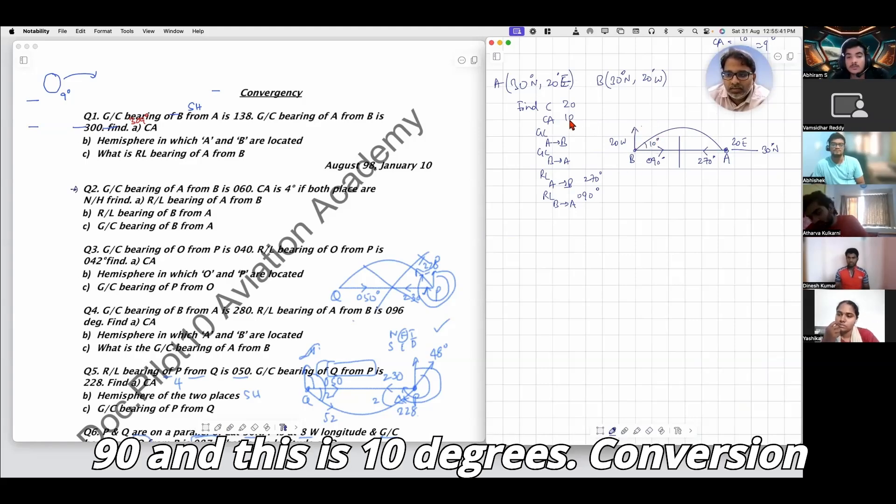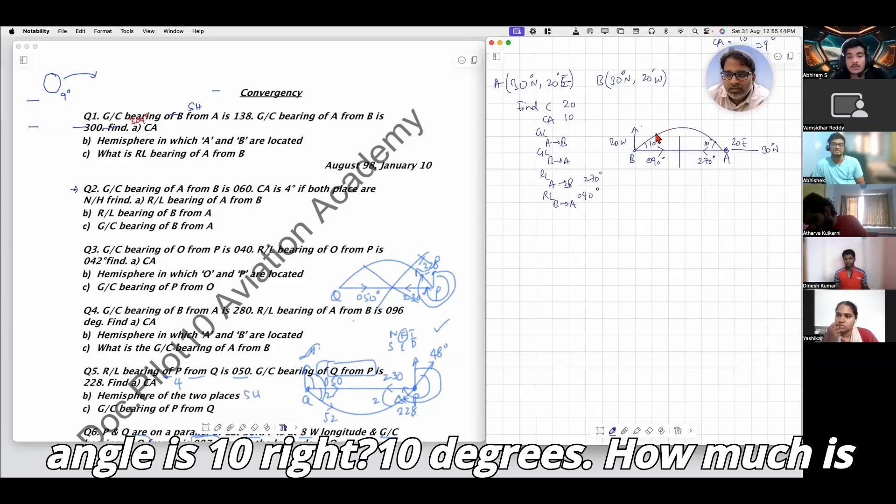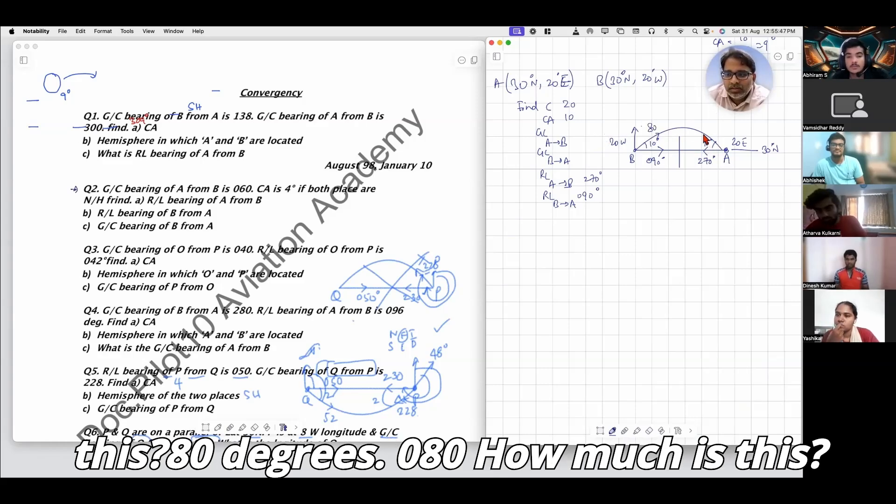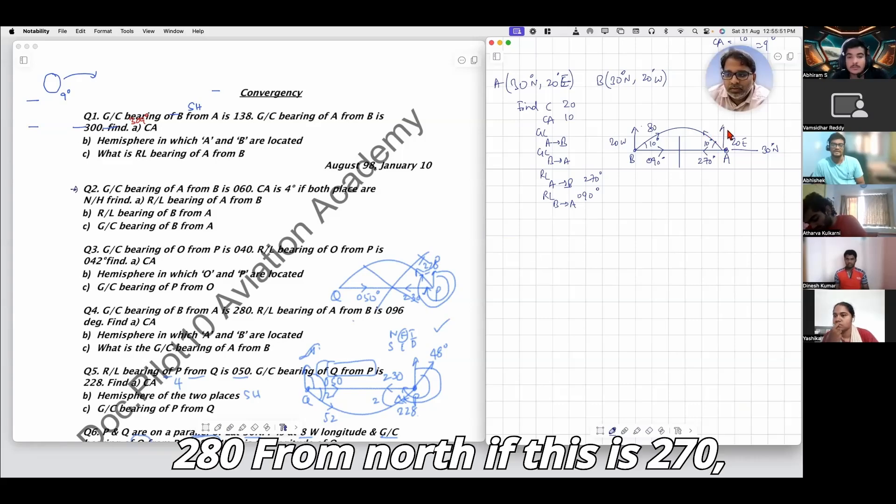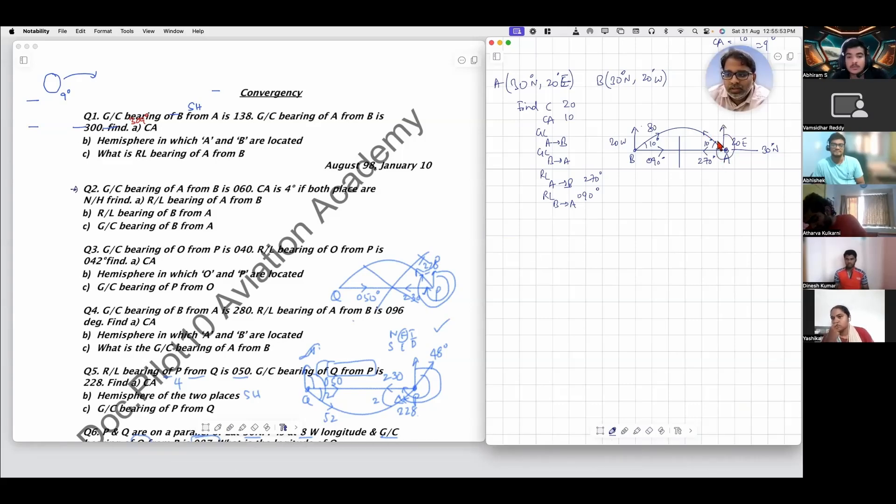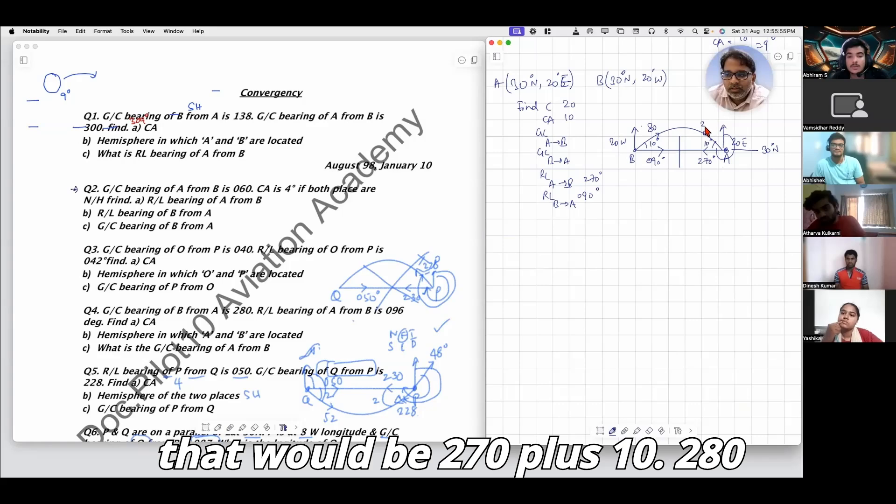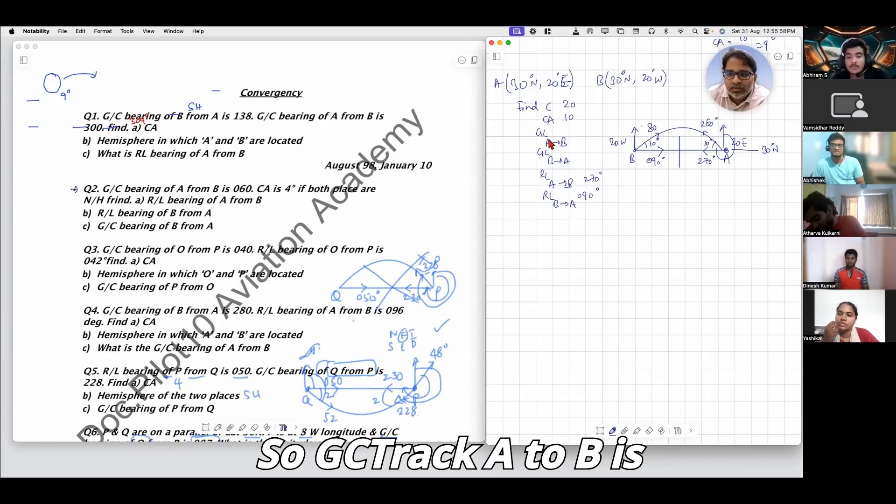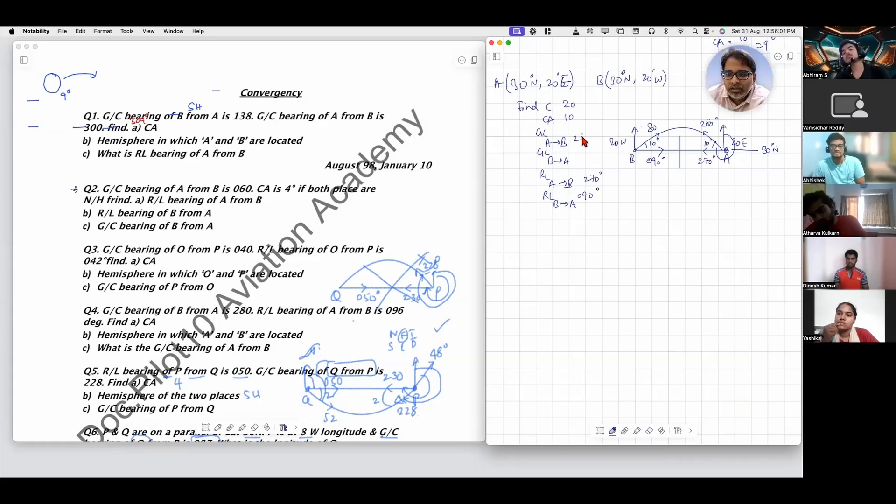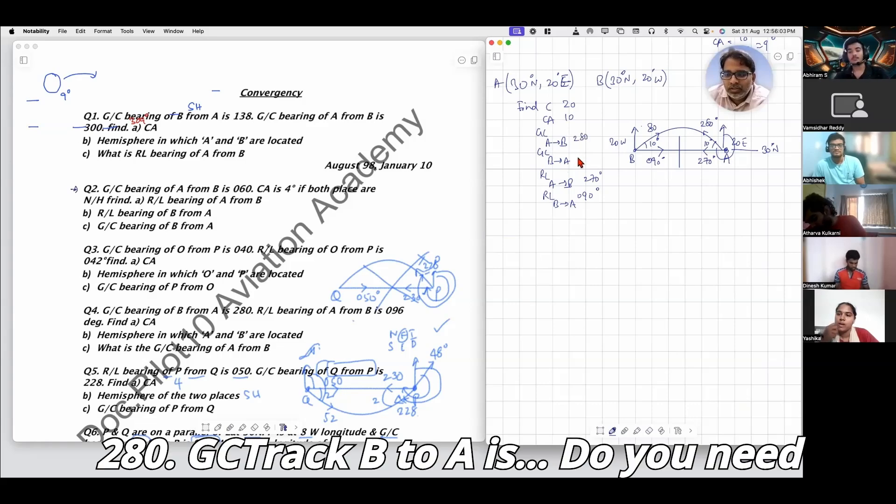080 degrees. How much is this? 280. From north, if this is 270, that would be 270 plus 10 equals 280. So GC track A to B is 280, GC track B to A is 080. Do you need pen and paper for this? No.